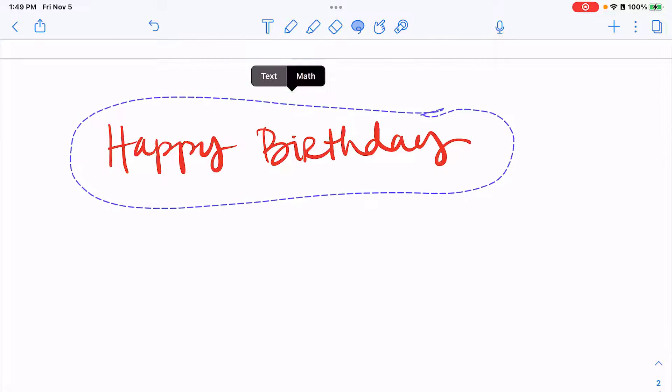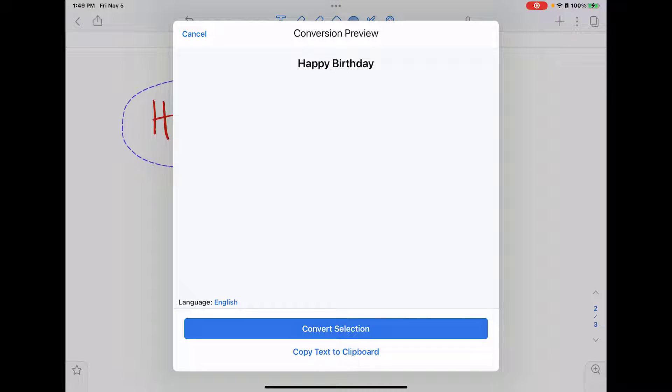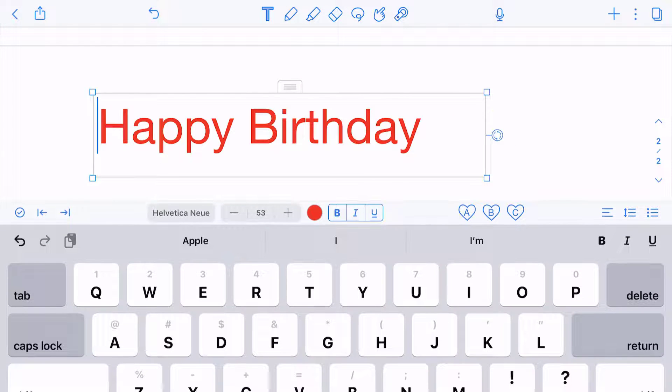I can either convert it to text. My default language is English so that is what it chose to convert to. I can make any corrections if I need to, and if I tap convert selection my handwriting then becomes the text.